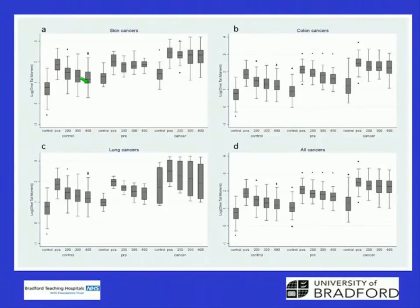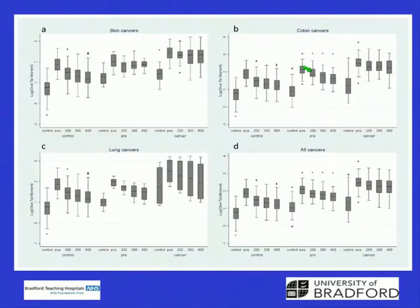Moving on to colon cancer — here you can see the control, the positive control, and the three different agar depths. Then for pre-cancerous or suspect colon cancer: the control, UV at 100, and different depths. For the confirmed colon cancers, you can see a different pattern from the control response. The pre-cancerous group here is polyposis, as people who have polyposis often have it before they develop colon cancer.